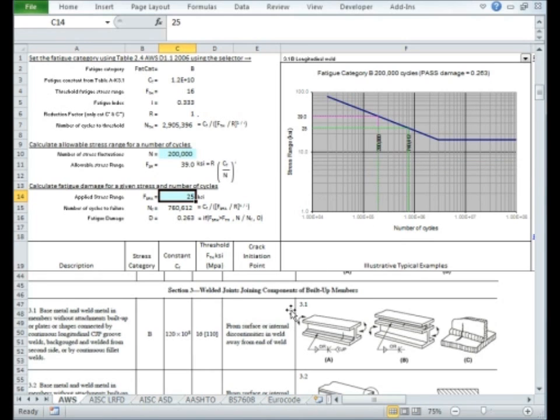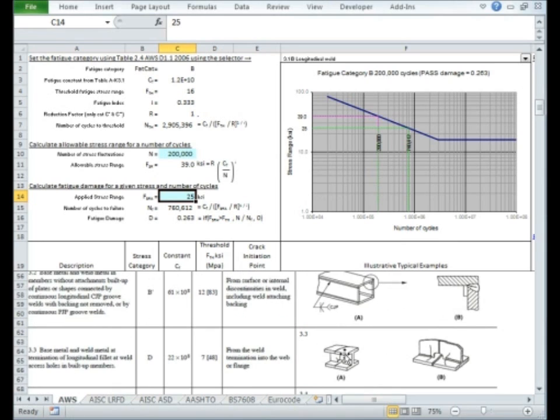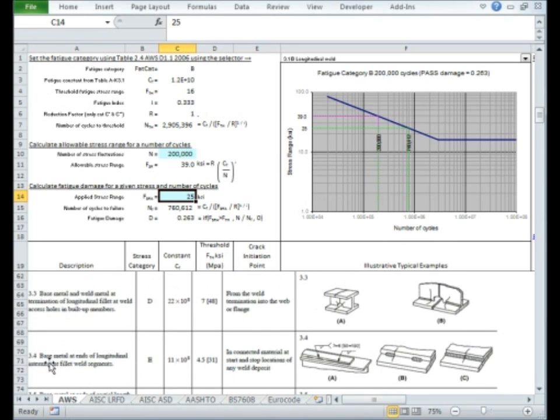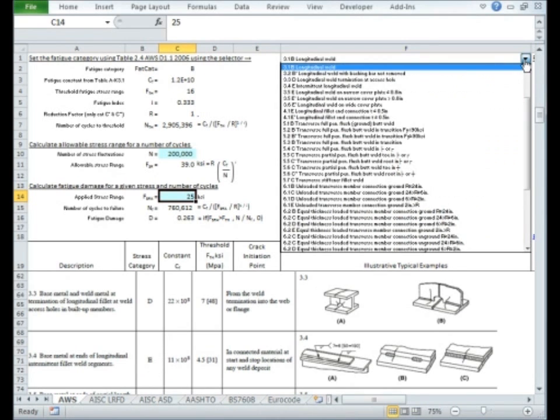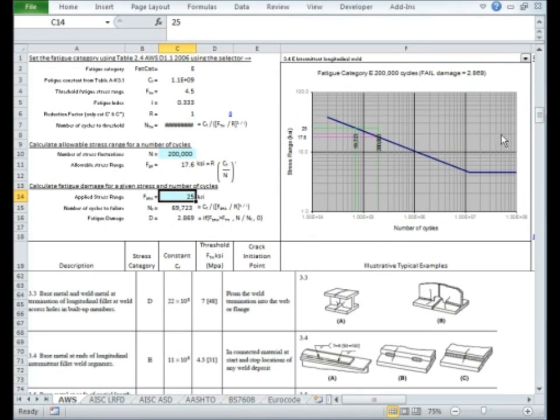It's not a simple job to assign stress categories. If we choose another detail, 3.4, which is a class E detail, we'll see what happens. The SN diagram has changed because these values have been automatically looked up. Now for our 200,000 cycles we have applied 25 KSI, but the design is only good for 17.6 MPa, or alternatively, it's going to fail after 69,000 cycles. Clearly this detail is not going to be useful to us.